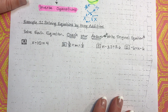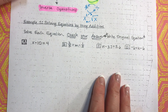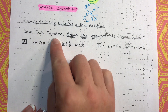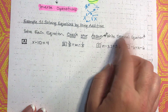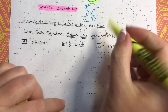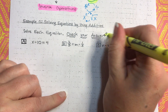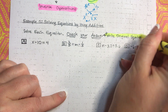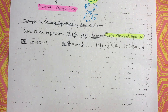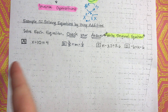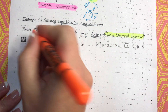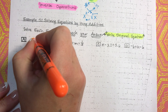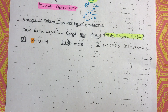Let's look at our first example — Example 1: solving equations by using addition. So, we're going to solve each equation and then check our answer, remembering to write the original equation in our check. Here with this question, x minus 10 equals 4 — we are trying to figure out what x is, so that means we have to get it by itself.